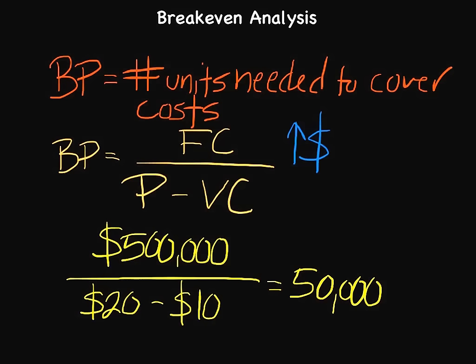We can also look at reducing our fixed costs. Maybe the plant we're using is too big — we can downsize, get a smaller plant, still produce effectively and efficiently, but lower our fixed costs. Maybe we need to reduce advertising expenditures or utilities. If you lower your fixed costs, you won't need to sell as many products to break even. We can also lower variable costs — finding less expensive materials, trying not to sacrifice quality significantly, and finding more efficient or faster ways to produce, so we don't pay as much in labor.